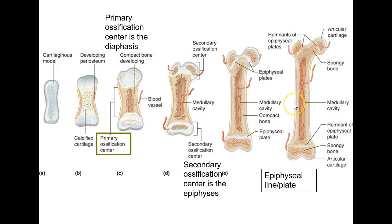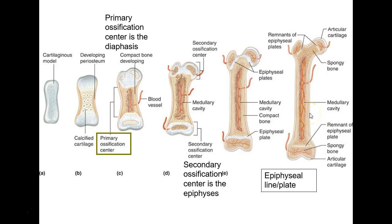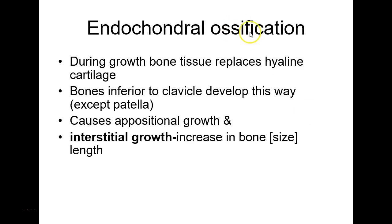Don't confuse articular cartilage with the periosteum, which is the connective tissue around the bone — mainly collagen with a little cellular layer under it. It's not over the ends because that's cartilage. Periosteum is around the bone: peri means around, ostium means bone.